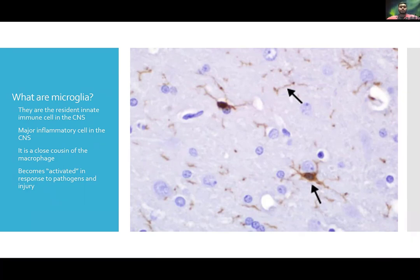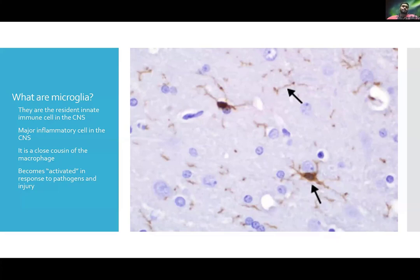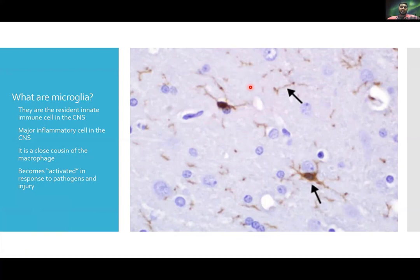Microglial cells are also a close cousin of the macrophage, and their activation involves selective morphological, functional, and expression differences which aid their immunological function. This histological photo of microglial cells in action shows that, similar to astrocytes, they have long processes that can reach different neurons and synapses, almost acting like guards — sensing the environment and making sure everything is in order.